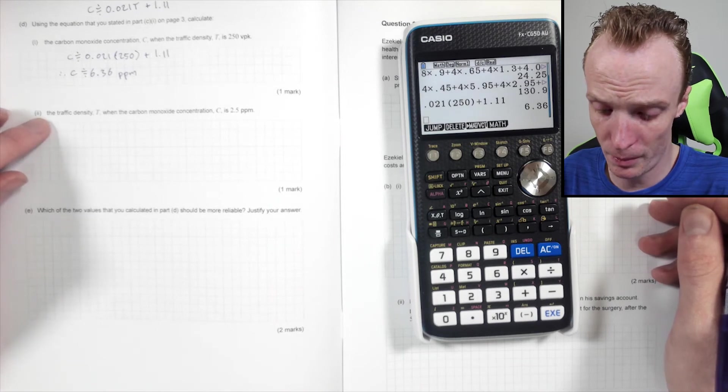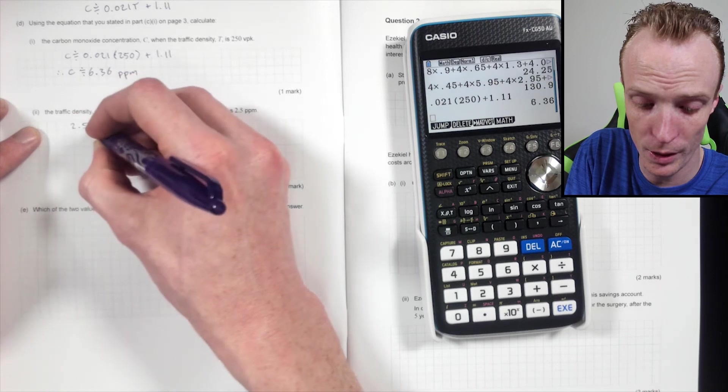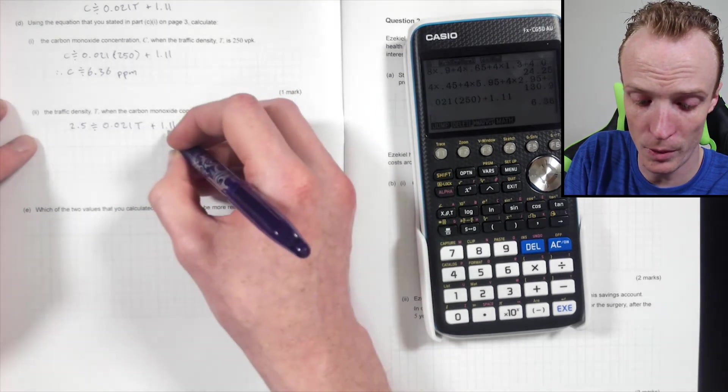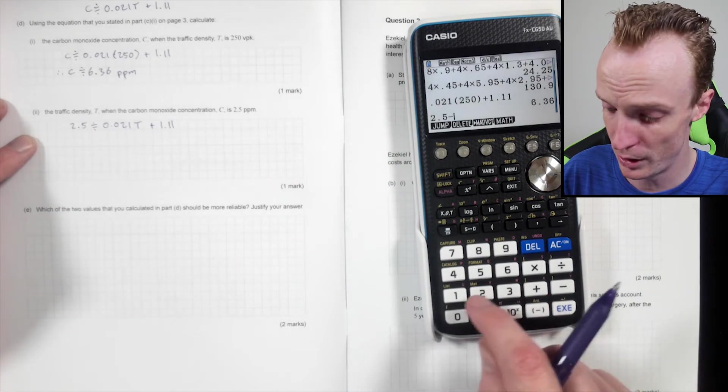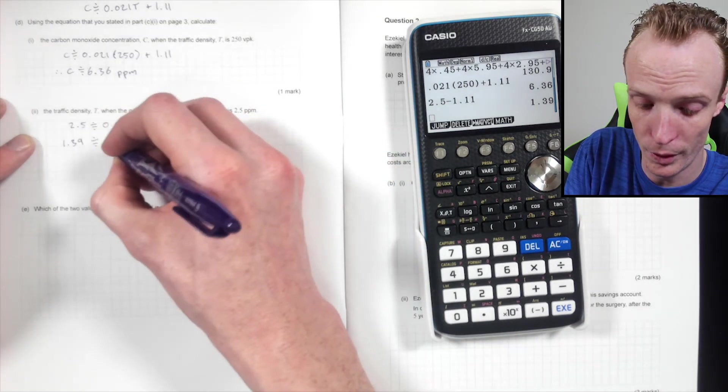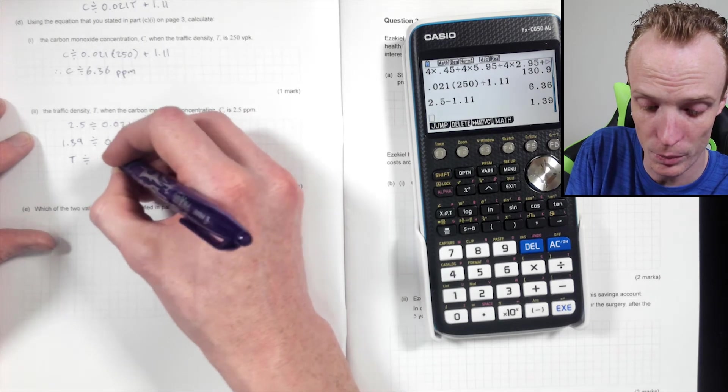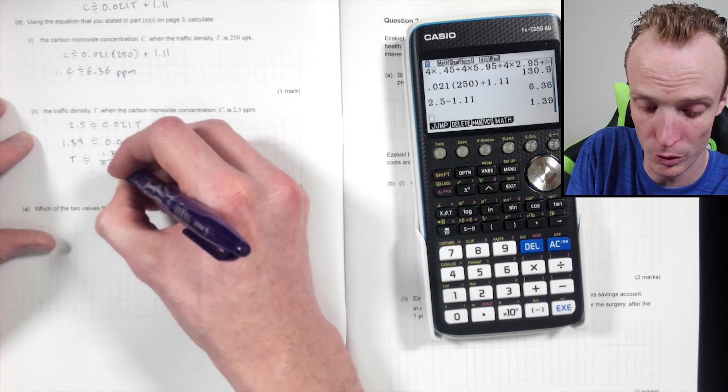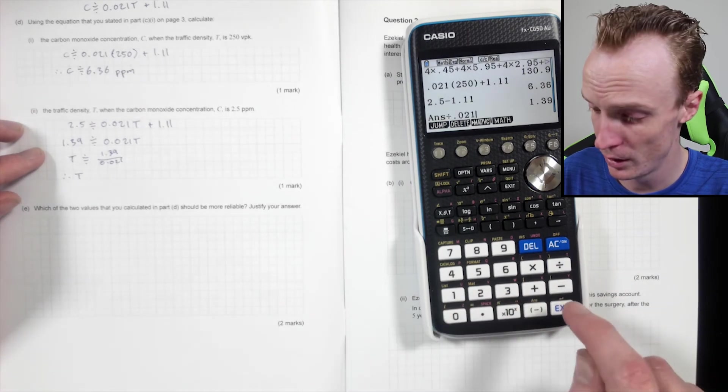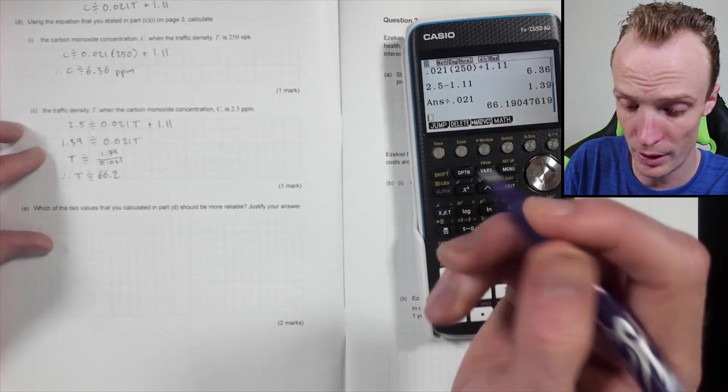Now calculate the traffic density when the carbon monoxide is 2.5. Well that's just replacing my c with 2.5. So 2.5 will equal approximately 0.021t plus 1.11. So subtract 1.11 from both sides. Just because it's an exam, I always just do this sort of number crunching like this to make sure you don't make a mistake. So 1.39 is approximately equal to 0.021t. So t will approximately be equal to 1.39 divided by 0.021. So from here you just put that in the calculator and get the answer. Therefore t is approximately equal to 66.2, and then what were my units here: VPK.